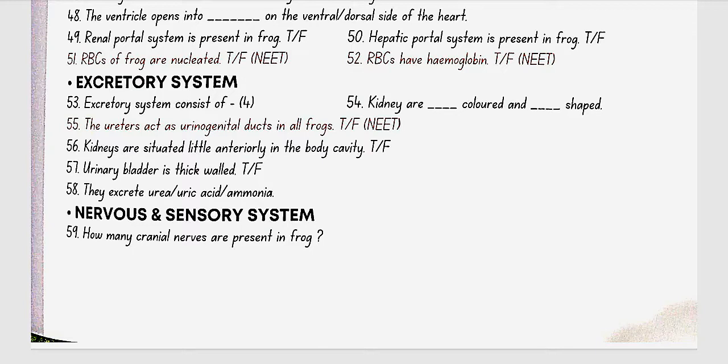Excretory system. Excretory system consists of pair of kidneys, ureters, cloaca and urinary bladder. Kidneys are dark red colored and bean shaped. The ureters act as urinogenital ducts in all frogs. No, this is false. In female, the genital and urinary ducts are different.